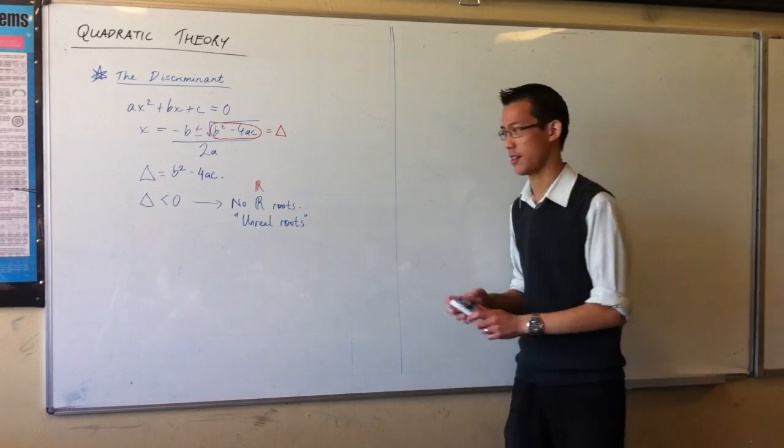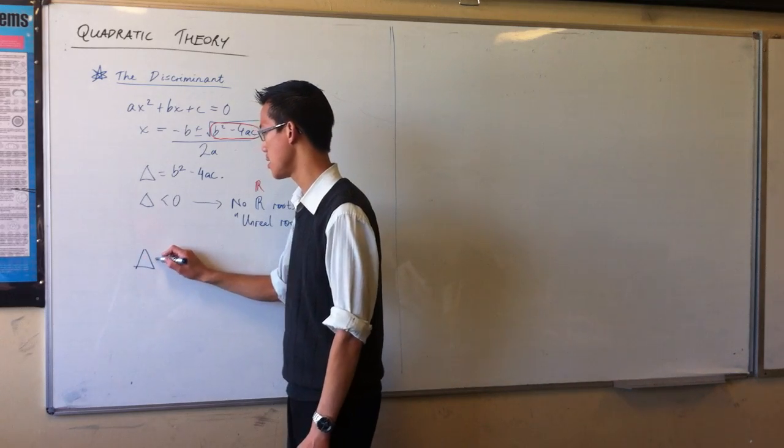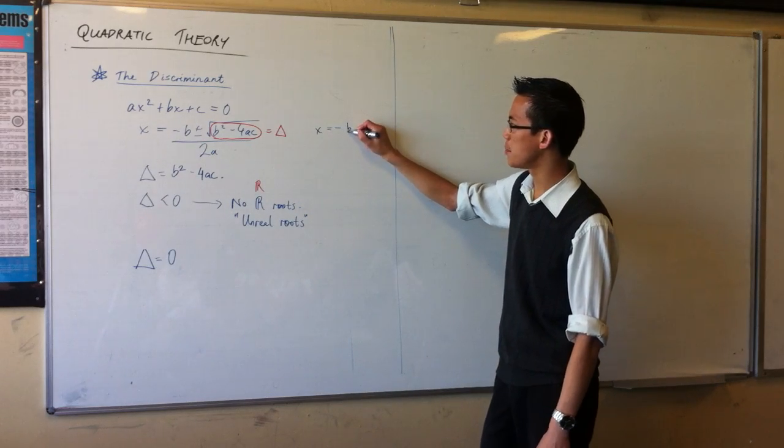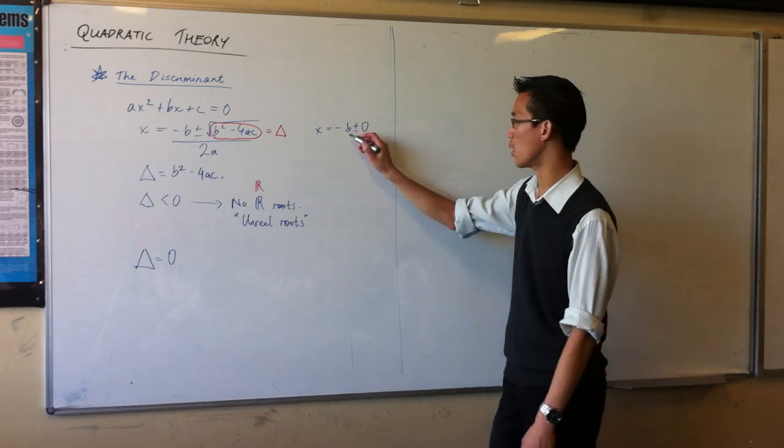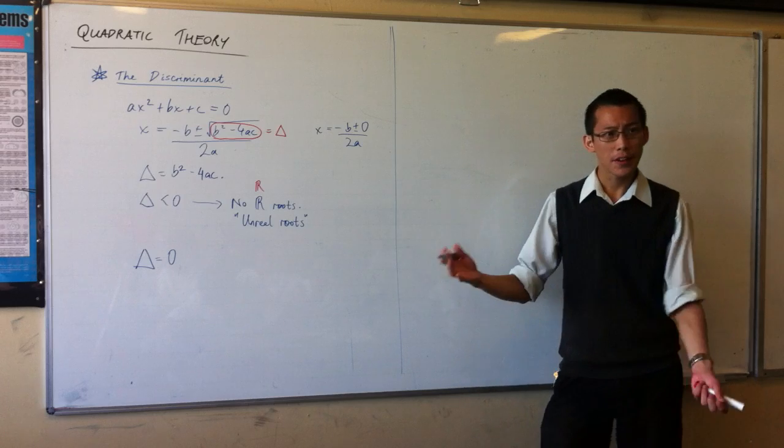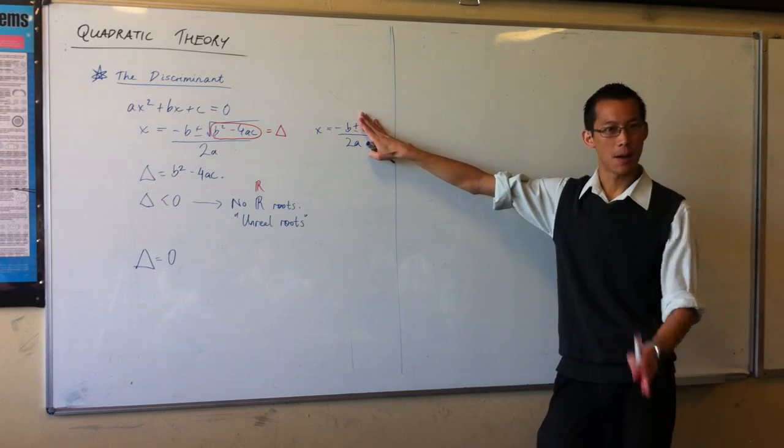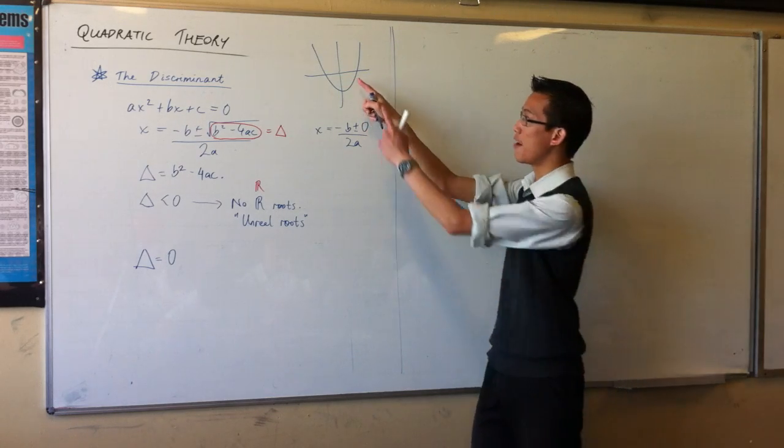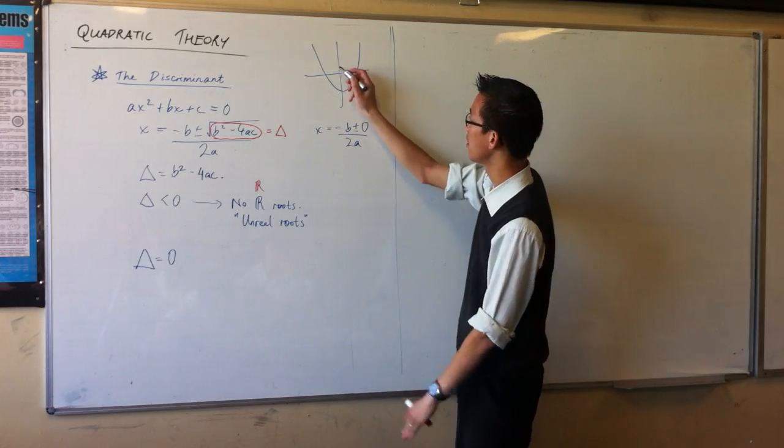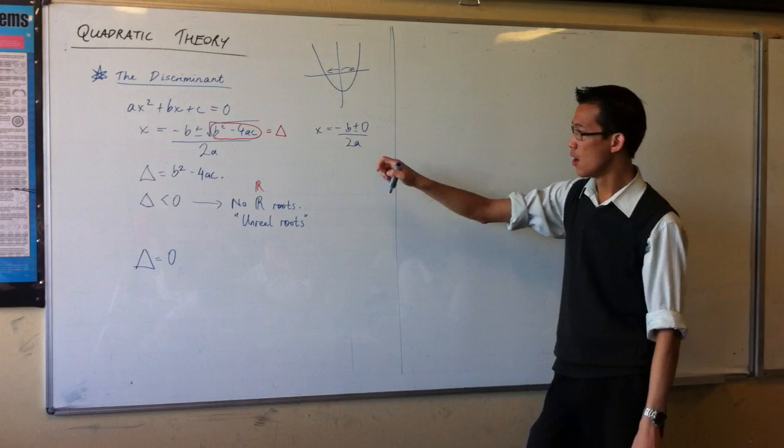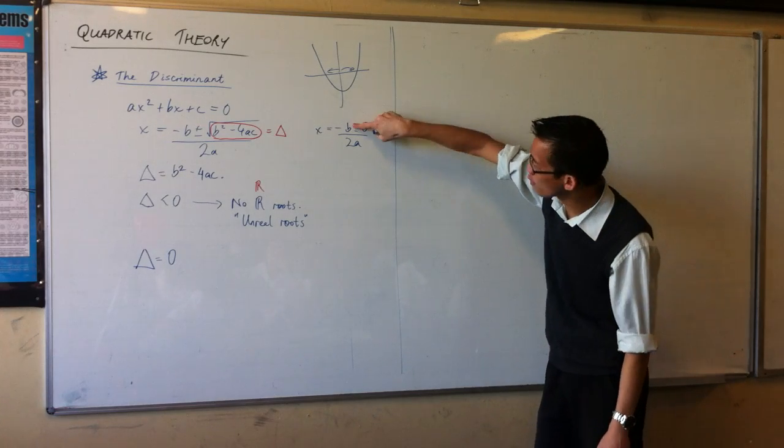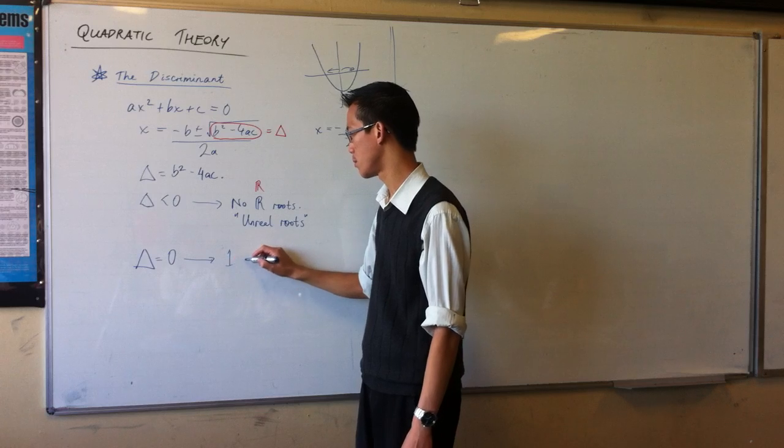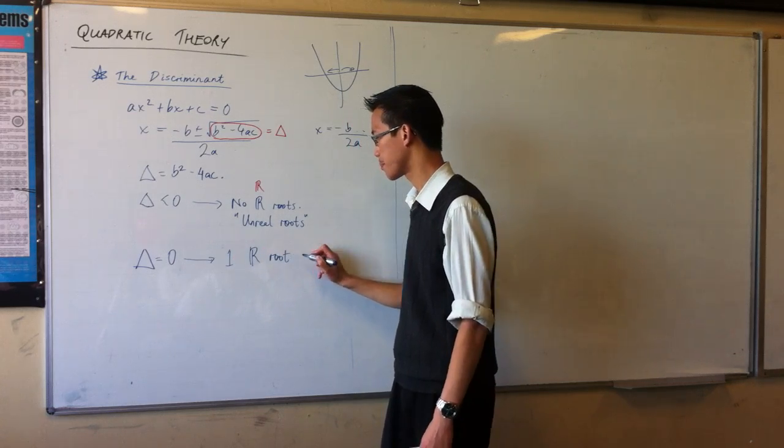All right, so that's if the discriminant is negative. If the discriminant is just equal to zero, just on zero, you can see what happens here. You have x being equal to minus b plus or minus zero, all over 2a. So don't forget, minus b over 2a, that's your axis, the axis of symmetry of the parabola. So it's like the middle. And this plus or minus is how far you go on either side to get to the roots because it's symmetrical. So that far and that far. Well, if you're going zero distance, you've only got one root. And it's at the axis of symmetry. So you would say one real root.